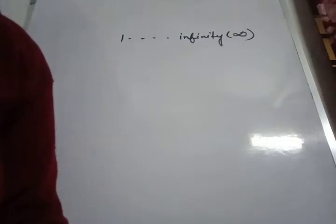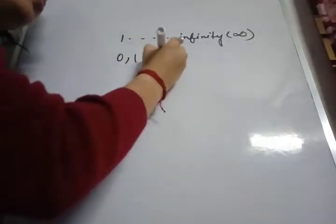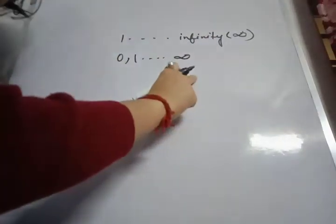Integers - when 0 is included with the natural number, then those are known as whole numbers or integers. So 0, 1, 2 to infinity, this is my whole number or integer.